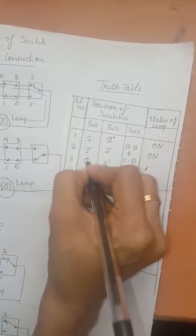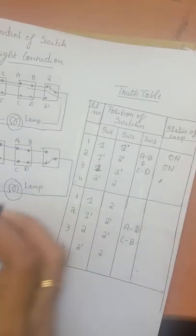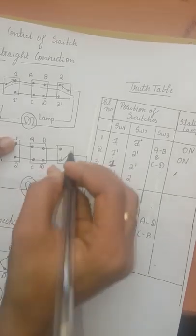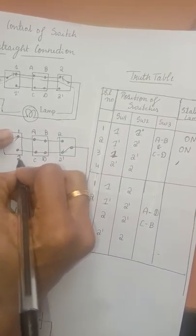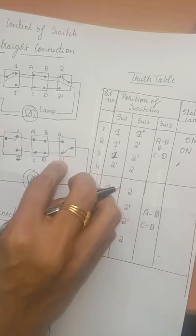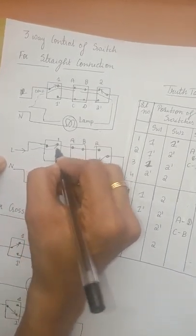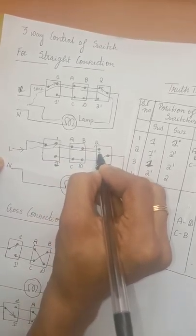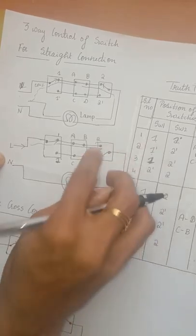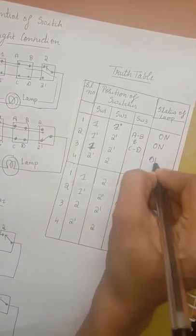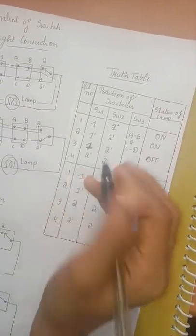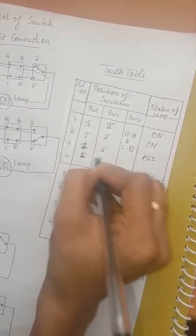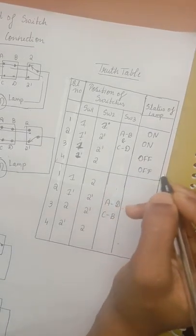For S1 at 1 and S2 at 2-dash under straight connection: the supply flows in, comes back to 1, travels 1 to A, A to B, and from B to 2 — but there is no path for the current to flow back to the lamp. So at S1=1 and S2=2-dash it is off. Similarly at S1=1-dash and S2=2, the lamp is off. This is about the three-way control of lamp under straight connection.